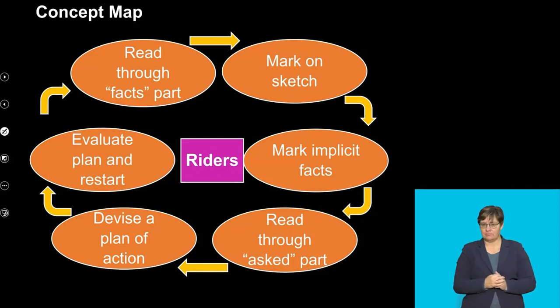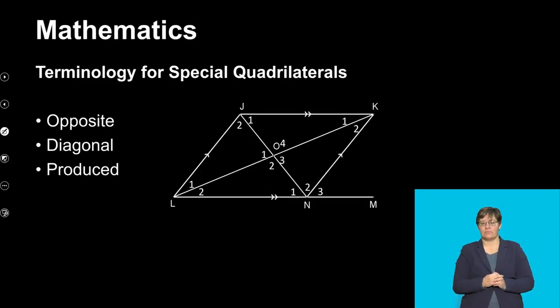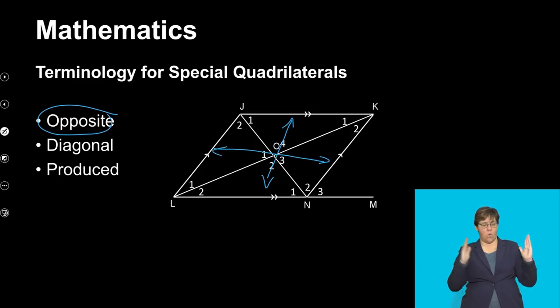But first we're going to look at some properties that we need to remind ourselves of. Remember the terminology that we use for the special quadrilaterals is what we call opposite. When I'm saying opposite, we know if it's sides then that side and that side are opposite, and that side and that side are opposite. Even these angles here are opposite.